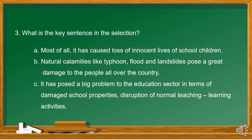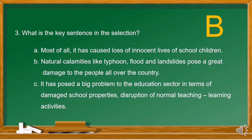For question number 3, what is the key sentence in the selection? A. Most of all, it has caused loss of innocent lives of school children. Letter B. Natural calamities like typhoon, flood, and landslides pose a great damage to the people all over the country. Or letter C. It has posed a big problem to the education sector in terms of damaged school properties and disruption of normal teaching-learning activities. The answer is letter B.